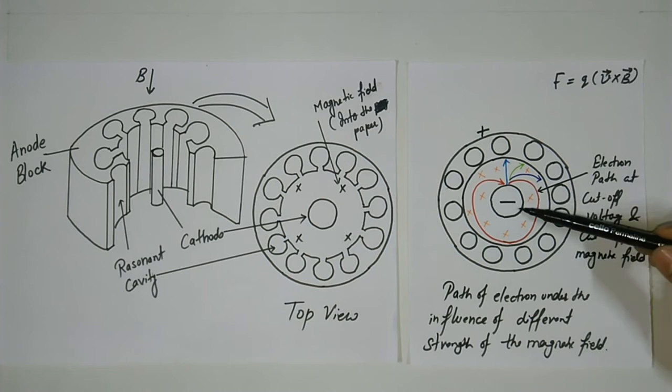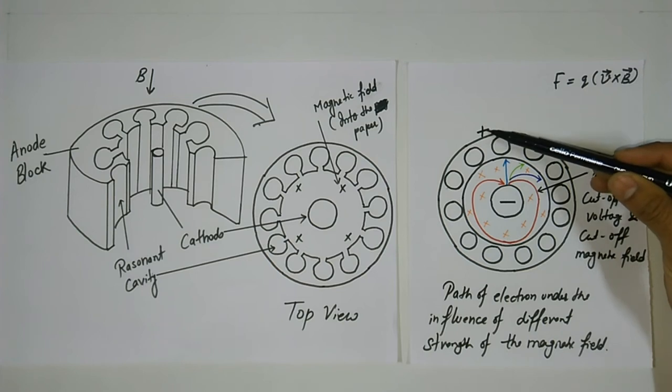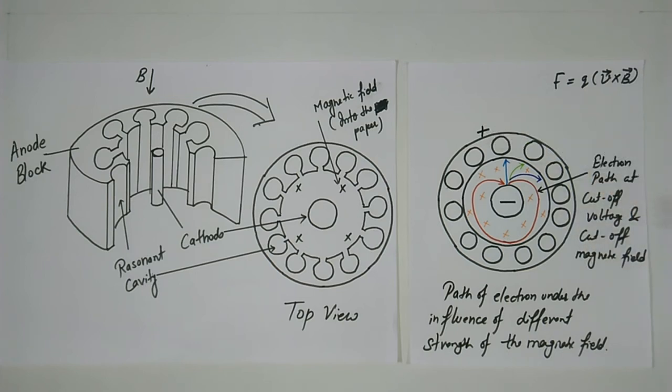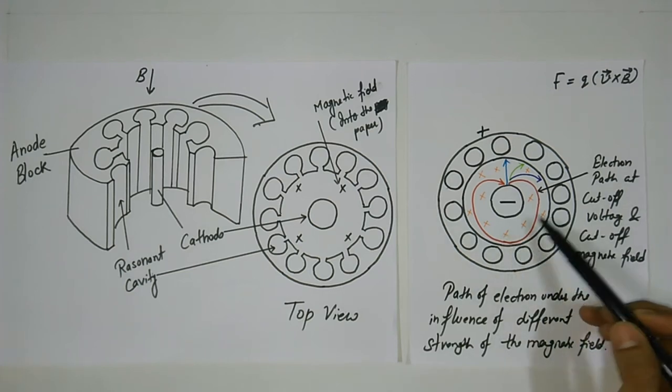The cathode is connected to the negative terminal of the supply and anode is connected to the positive terminal of the supply. The production of microwave begins when electrons move from cathode to anode. But as these electrons move they create their own magnetic field and this magnetic field interacts with the applied magnetic field.